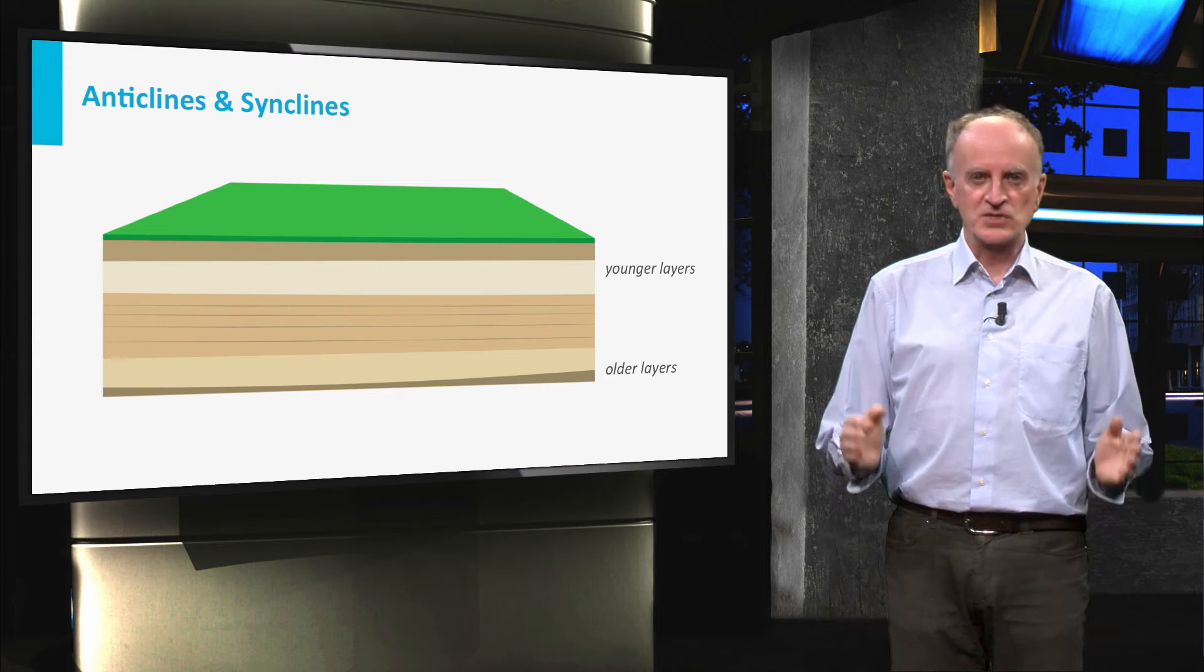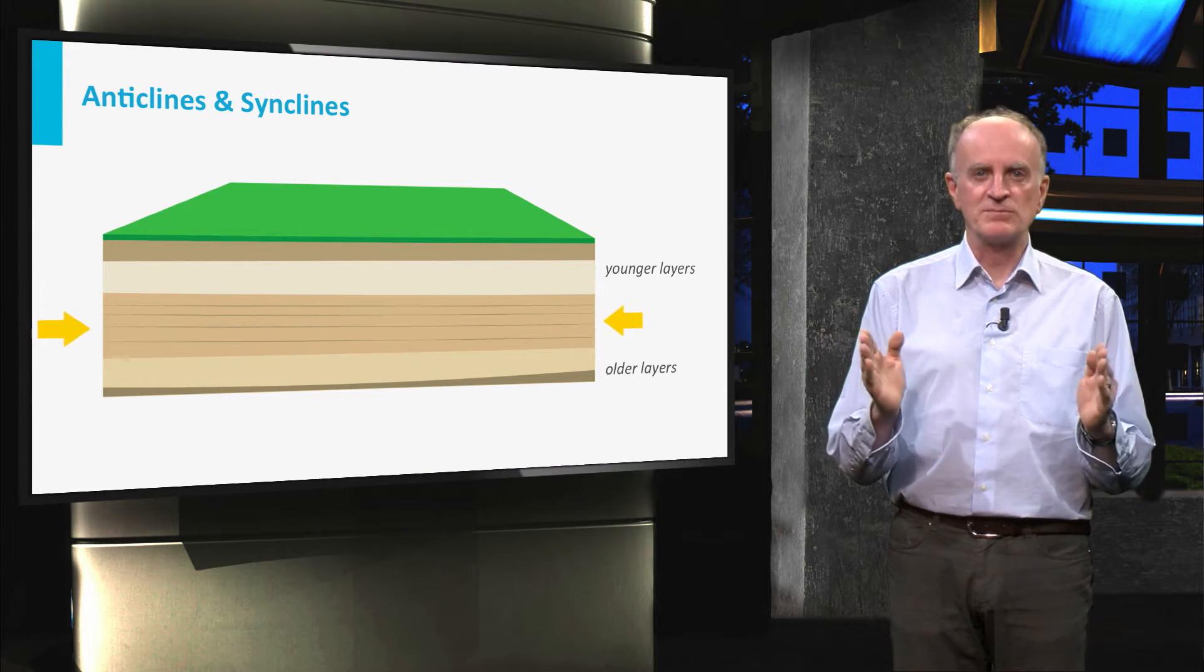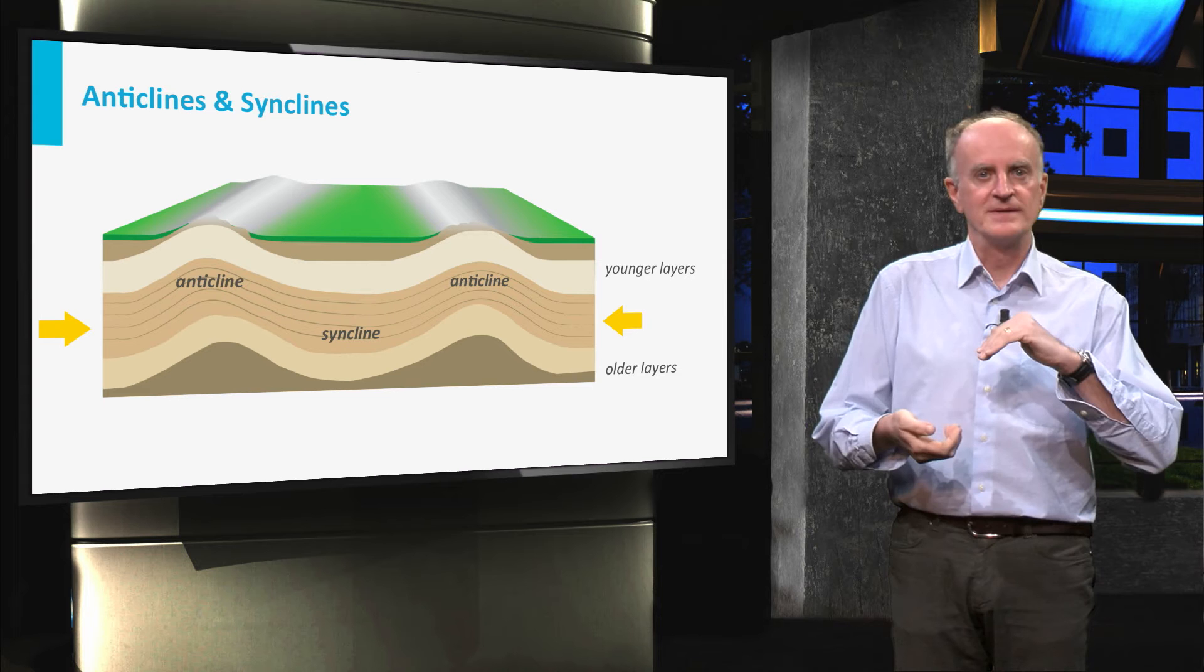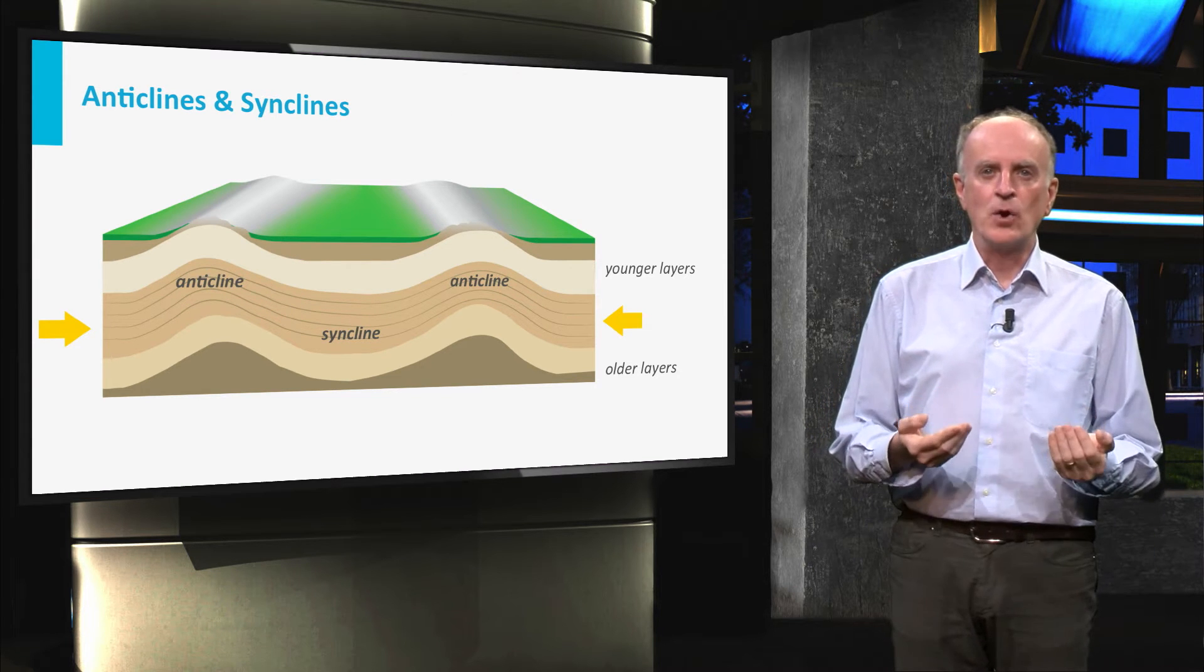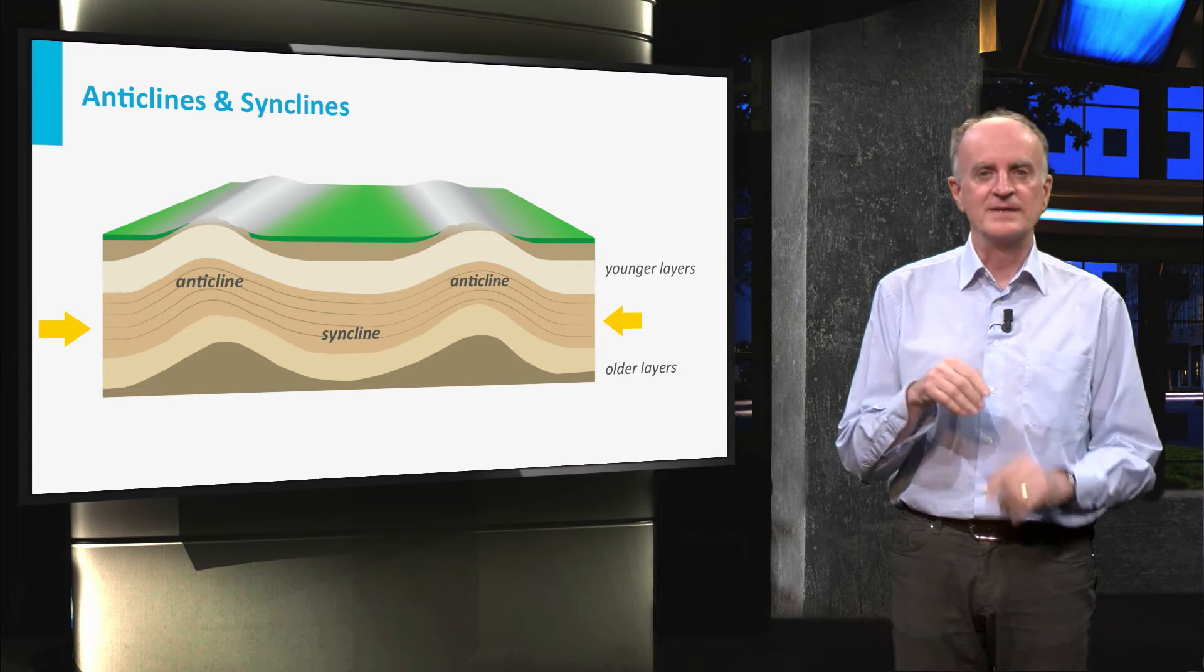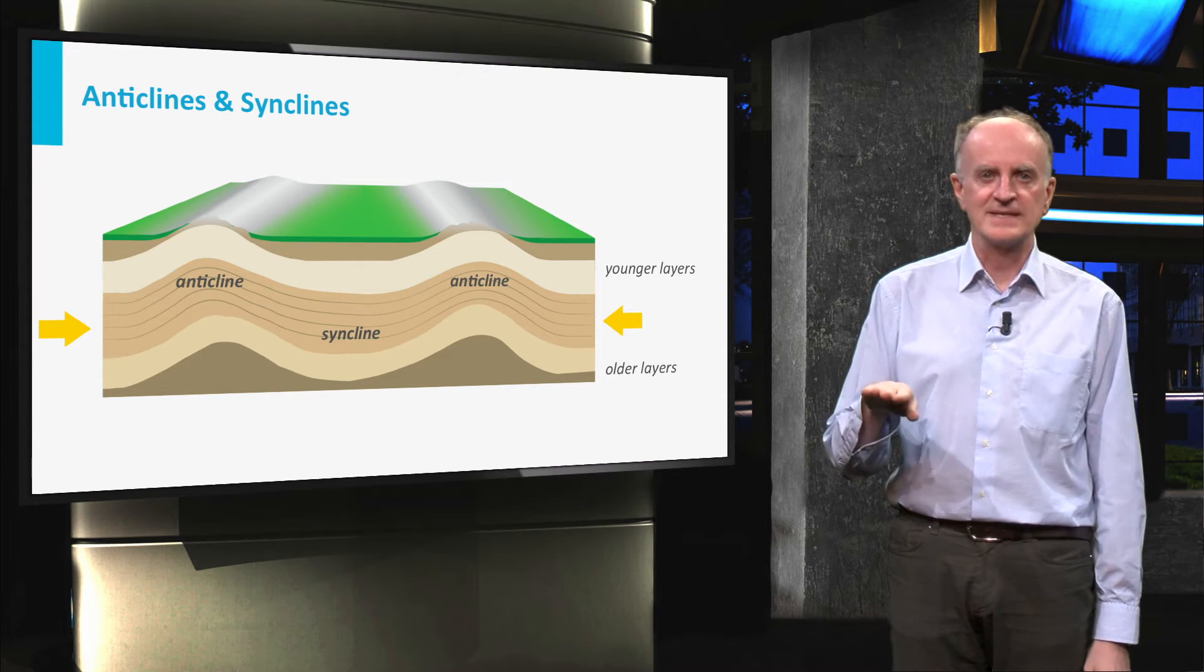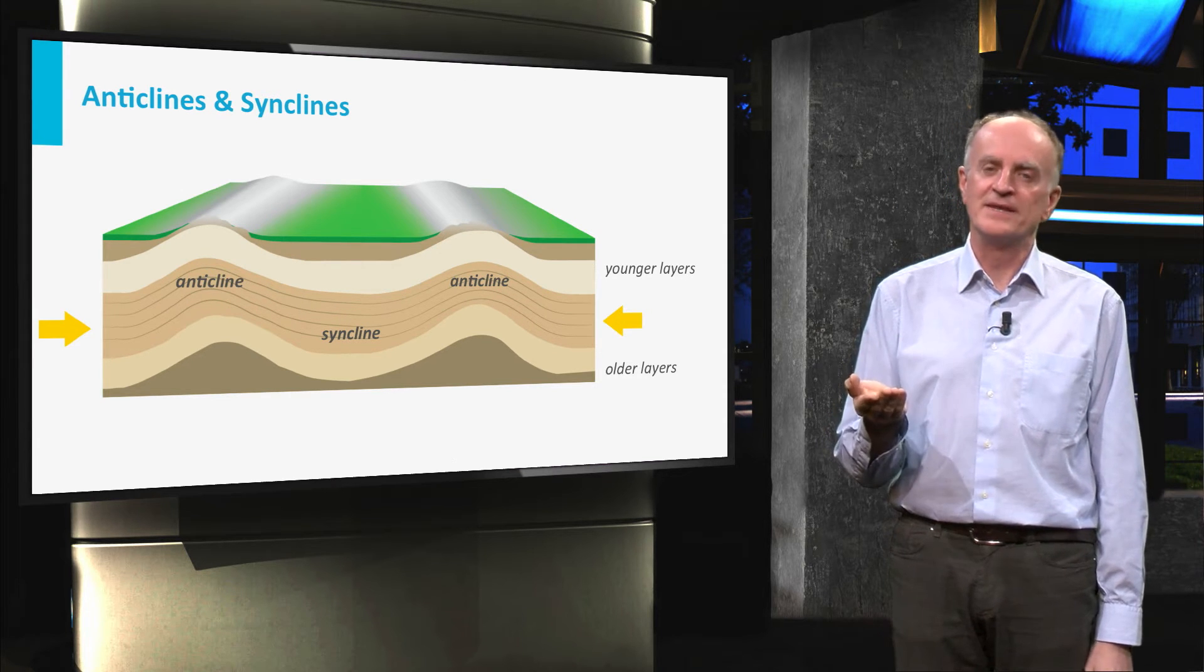When layers are shortened, they can develop folds which are convex upward or downward. In the first case they are called anticlines and have the oldest rock in the core. In the second case they are called synclines and in the core you will find the younger rocks.